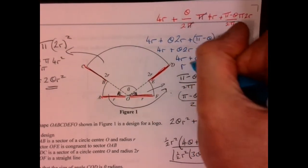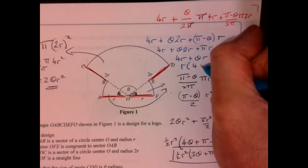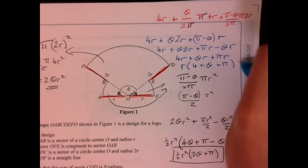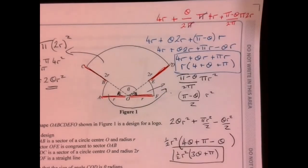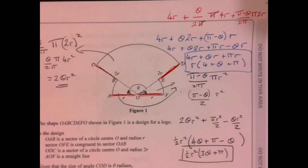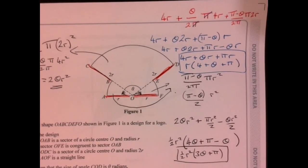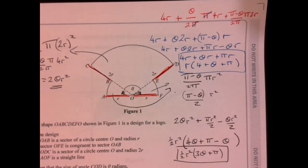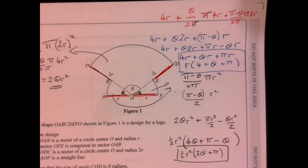And there we are. Maybe take out the r. Four plus theta plus pi. There you go. Either of those two would be fine. So that question looks really scary. But actually, when you get into it, just some basic circle sector work. There you go.